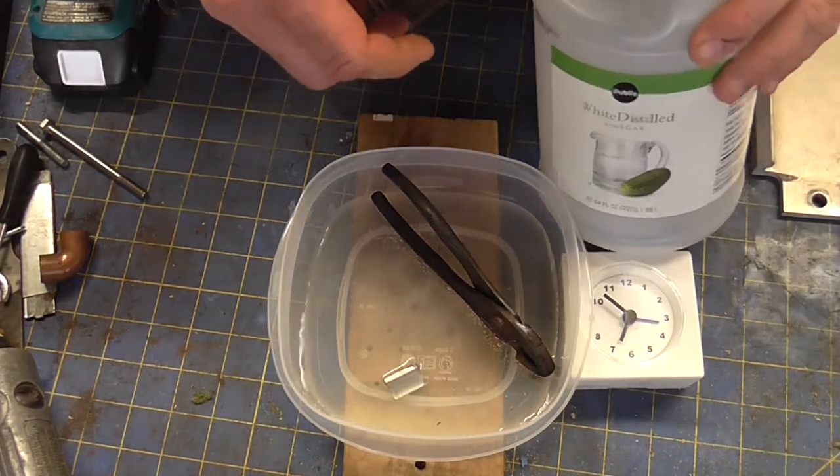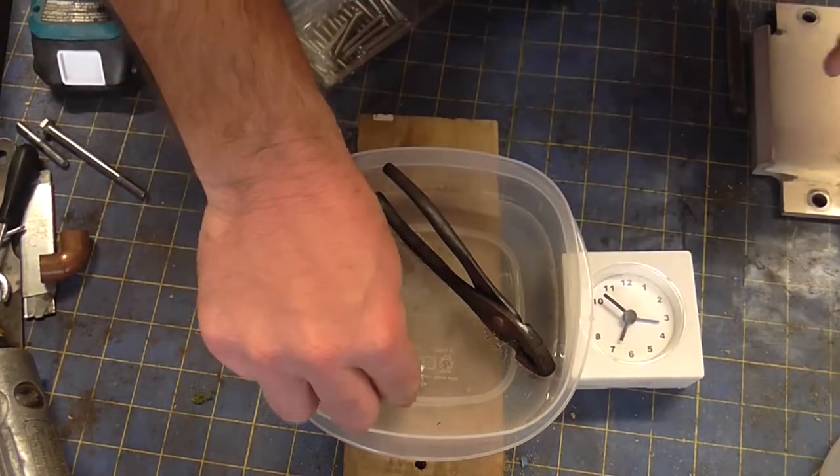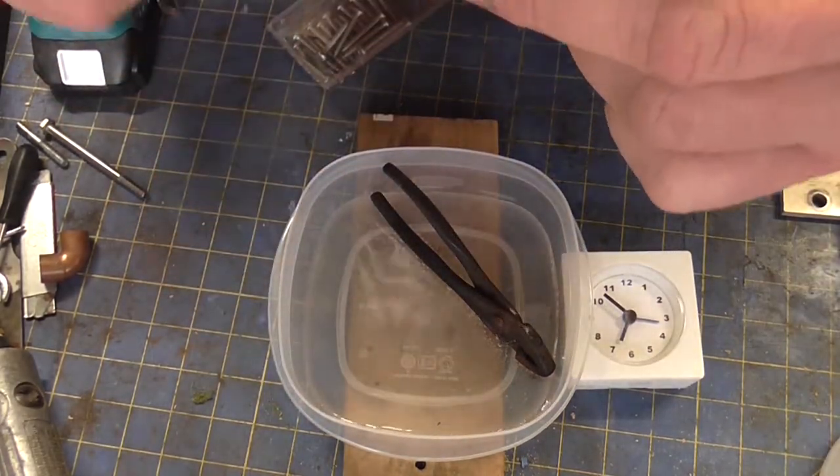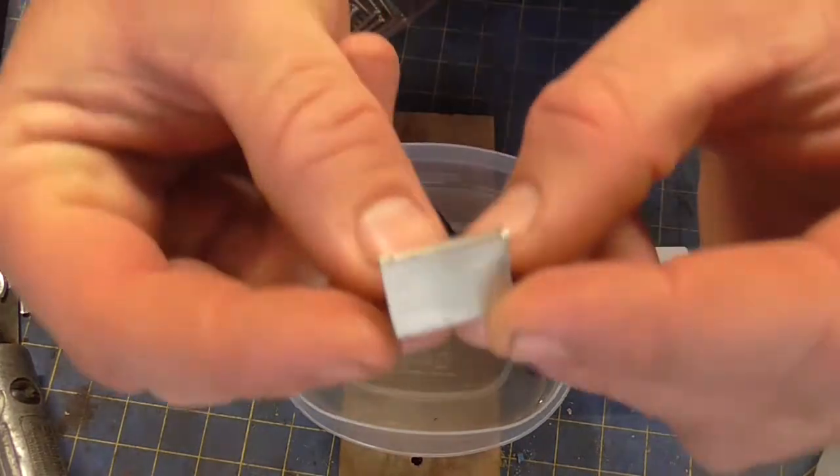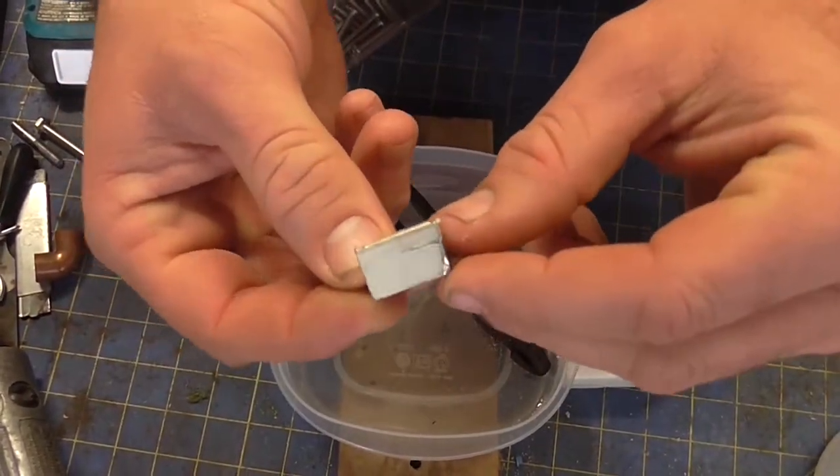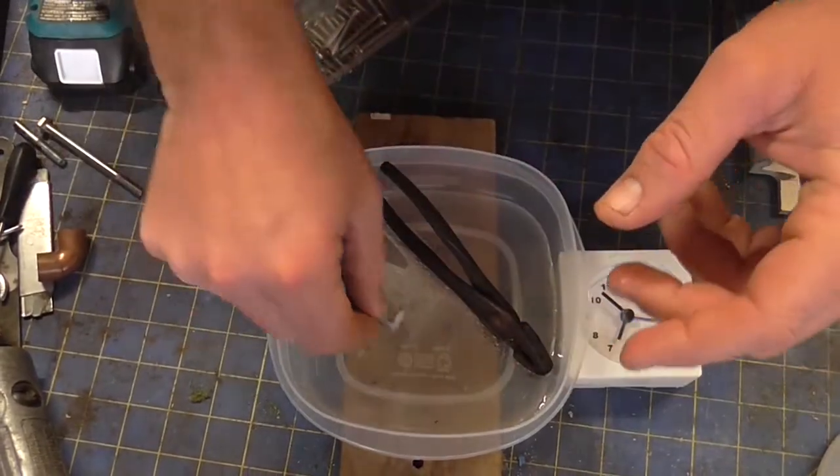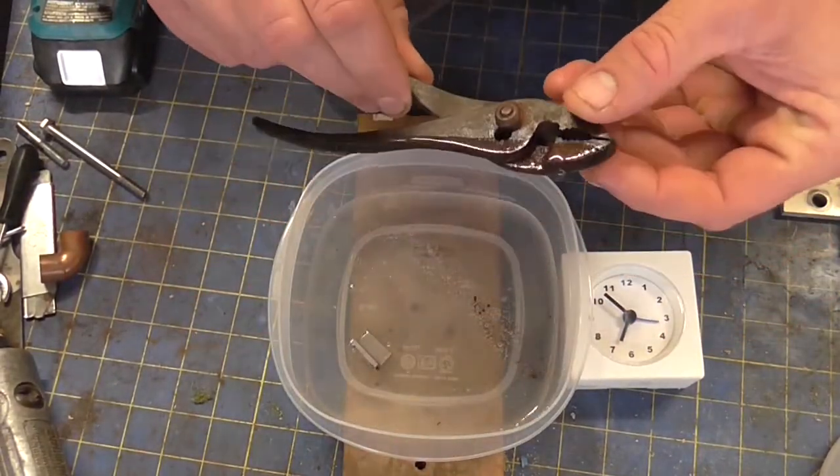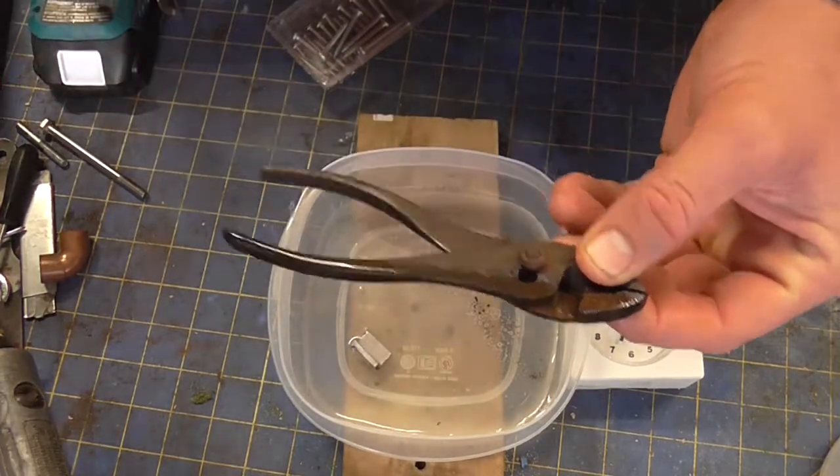All right, so here we are about five hours later. The vinegar hasn't done anything at all to the aluminum. There's no indication at all it's done anything.